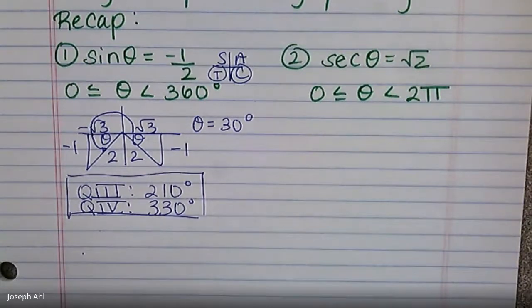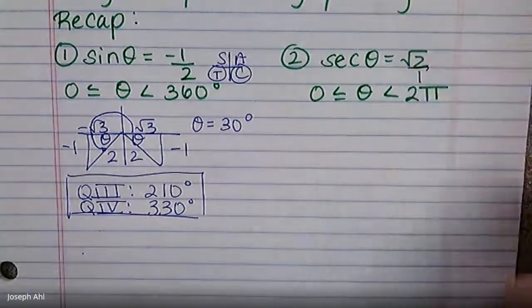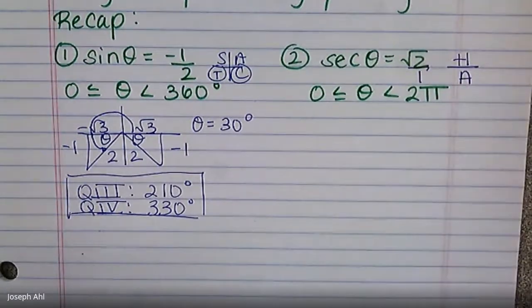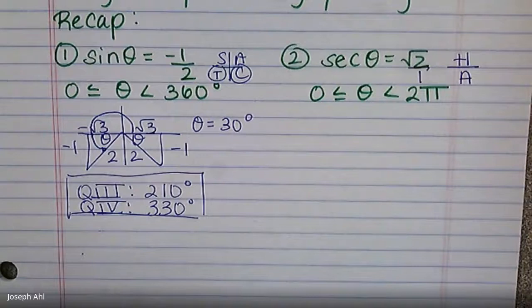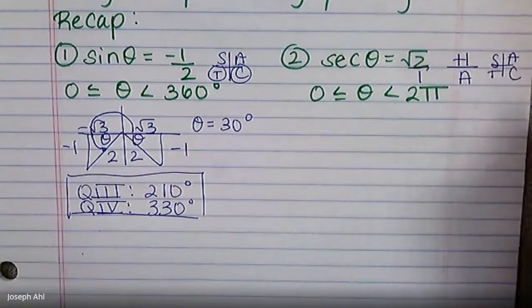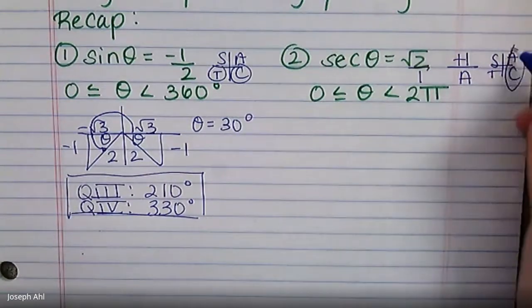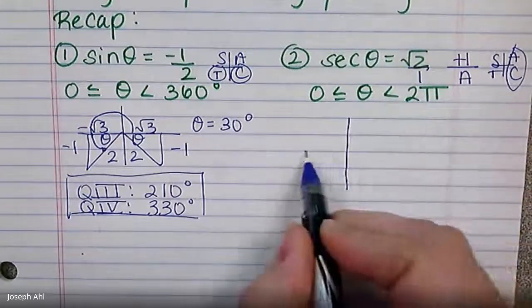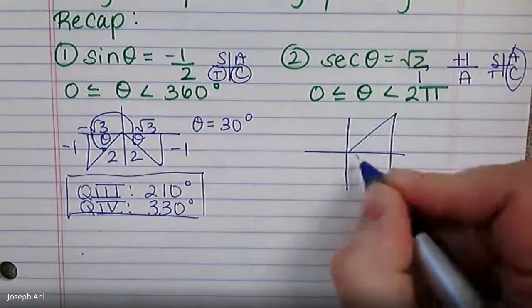Moving across the way to secant theta equals radical two. If you like, radical two over one, so that you can think of the hypotenuse over the adjacent. You definitely have to know secant is the reciprocal of cosine, and knowing that helps me pick out which quadrants we're in. Cosine is positive in one and four. So you're going to draw a triangle in quadrant one and a triangle in quadrant four.